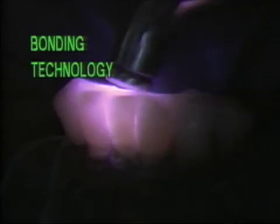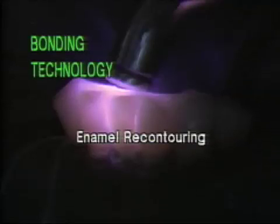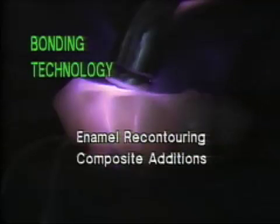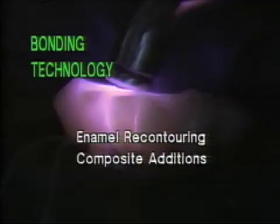The purpose of this presentation is to illustrate the use of bonding technology for partial denture abutment teeth. Both enamel recontouring and the addition of posterior composites to modify the contours of natural teeth will be demonstrated as a conservative and possibly lower-cost alternative to crowns, which often remain the treatment of choice.